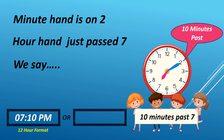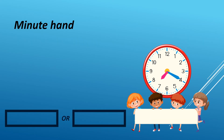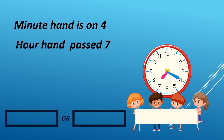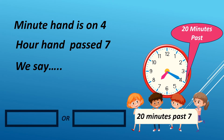We read it as 1910 hours in 24-hour format. When the minute hand is on 4 and the hour hand passed 7, we say 20 minutes past 7. It can either be AM or PM. For example, it is 7:20 PM in 12-hour format.